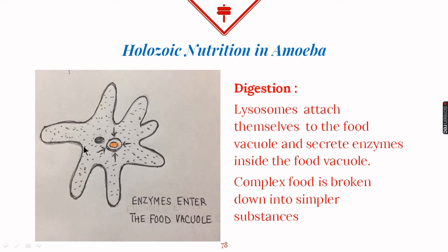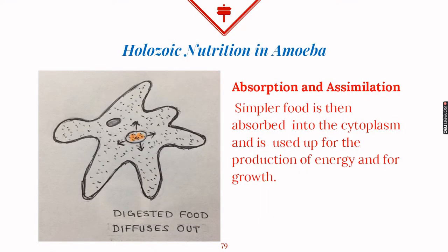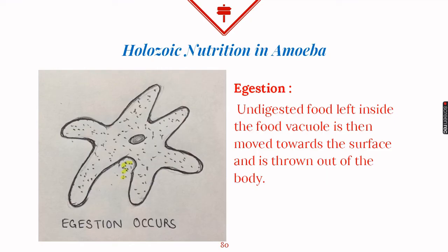Once the food vacuole is inside the body of amoeba, lysosomes attach to it and release enzymes inside it, breaking the food down into simpler form. This simple food then comes out of the food vacuole, is absorbed in the body, and used for producing energy or for growth — that is, it is assimilated. The undigested food is taken back towards the cell membrane and thrown out of the body by the process of egestion.